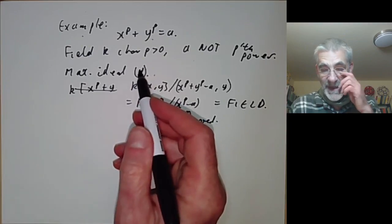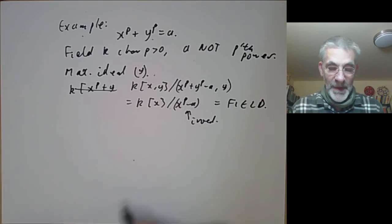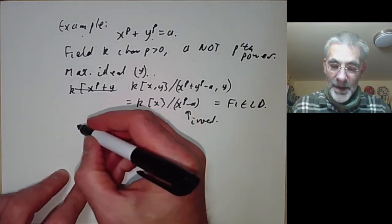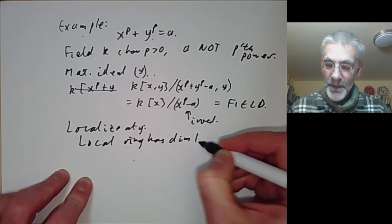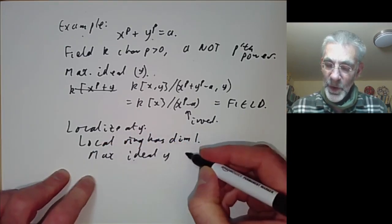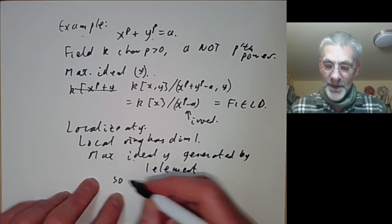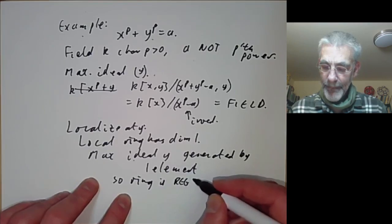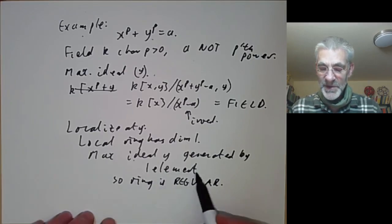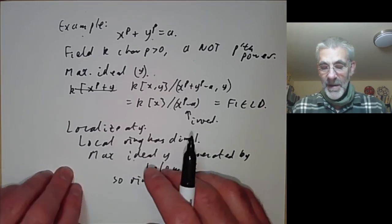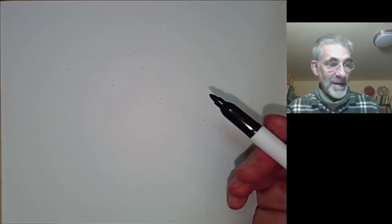So (y) is actually a maximal ideal because the quotient by it is a field. The local ring has dimension one, and if we localise at y the maximal ideal is generated by one element, so the ring is regular. Since the maximal ideal is generated by one element, the cotangent space is also one-dimensional. So over this non-algebraically closed field we have a maximal ideal that gives us a regular local ring.